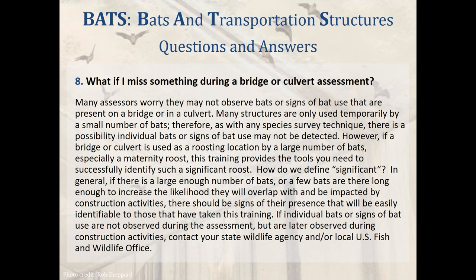This training provides the tools you need to successfully identify a significant roosting location used by a large number of bats, especially a maternity roost. In general, if there is a large enough number of bats, or a few bats present long enough to increase the likelihood they will overlap with and be impacted by construction activities, there should be signs of their presence that will be easily identifiable. If individual bats or signs of bat use are not observed during the assessment but are later observed during construction activities, contact your state wildlife agency and/or local U.S. Fish and Wildlife Office.